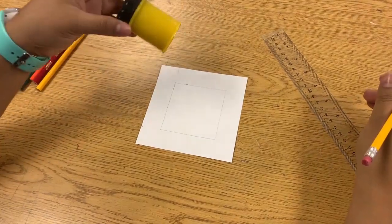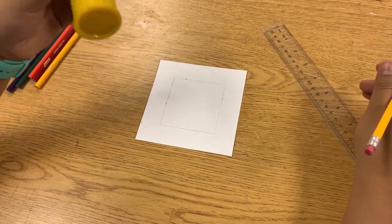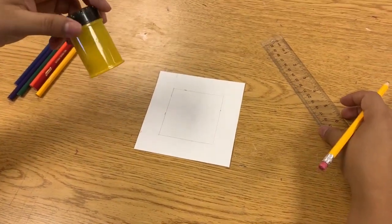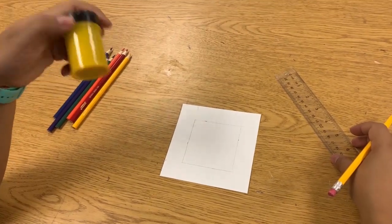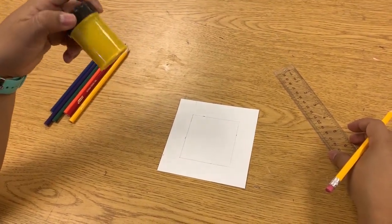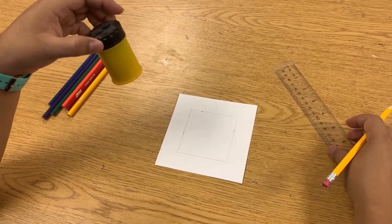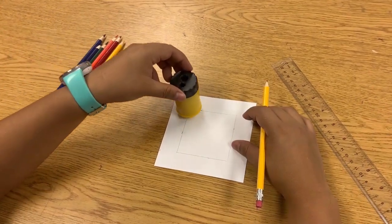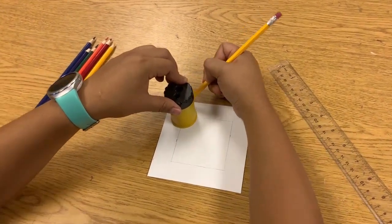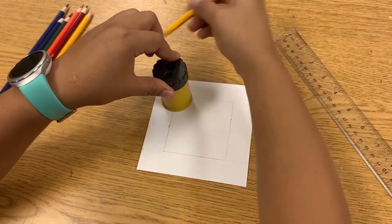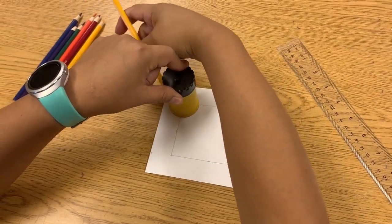Now what I'm going to do is I'm going to take this sharpener. This is what I'm going to use to trace. If you have a small shaped heart or square or whatever it is that you have that you can trace, you can use that. And I'm just going to go ahead and start tracing the bottom of this sharpener all over my paper.